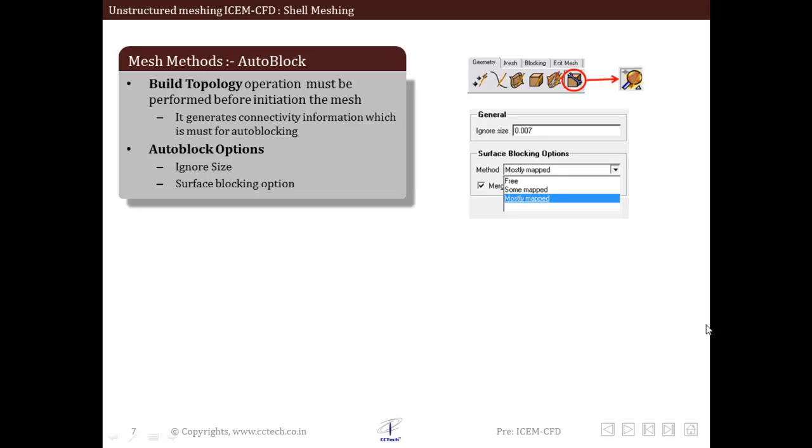Let us study the auto block method in detail. Auto blocking depends on connectivity or arrangement of surfaces to find the best suitable block arrangement. But if the built topology operation is not performed, then this information is not available. This will be problematic while producing surface mesh, so we have to perform built topology operation before initiation of the mesh.